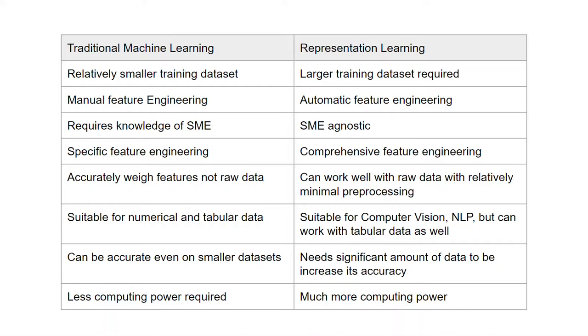Traditional ML designs specific features to be used as data. Representational learning generates comprehensive features and an exhaustive amount of features. Traditional ML is highly accurate in weighing the features but not very accurate in handling the raw data. Representational learning can work well with raw data with relatively minimal preprocessing.